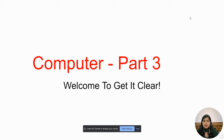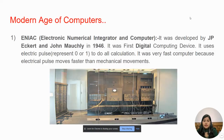Today we will study computer Part 3 — the modern age, which started from 1944 onwards to the present. This first machine stands for Electronic Numerical Integrator and Computer — ENIAC.